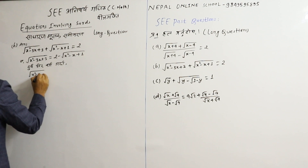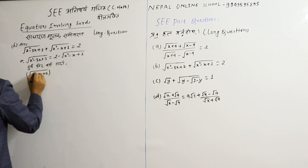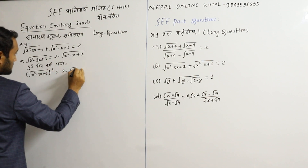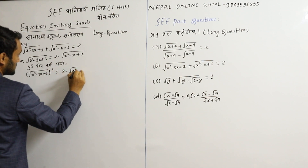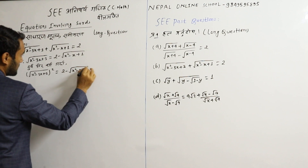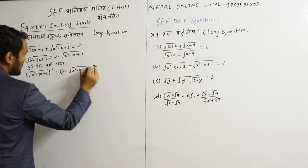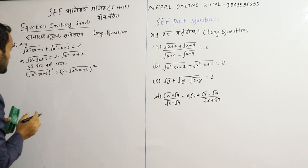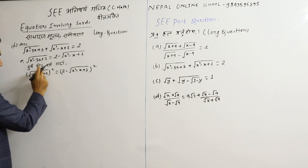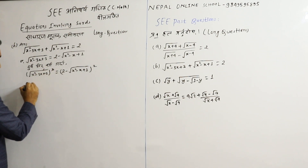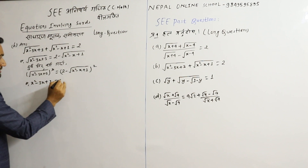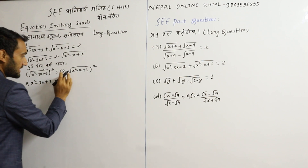root(x² − 3x + 3) equal to 2 minus root(x² − x + 1). Okay, root(x² − 3x + 3) squared equals 2. So this is a, this is b.